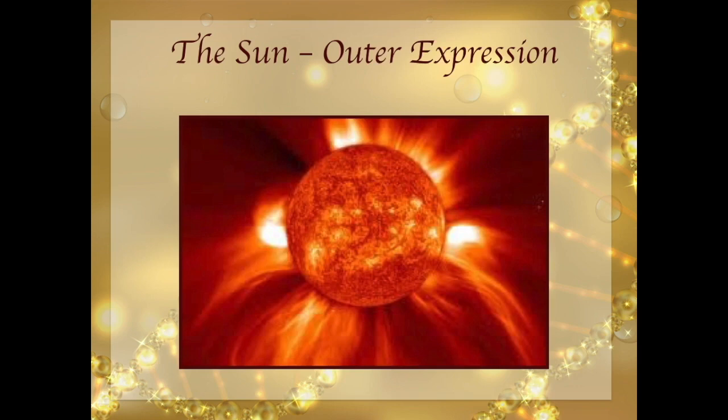The sun moves in human design through the 64 hexagrams from the Chinese I Ching, or the 64 gates, over the course of 365 days. It goes through all of the 64 gates in the human design system. What that means is that over the course of a calendar year, approximately every six days, the sun transits through one of the 64 core archetypes in the human design system.